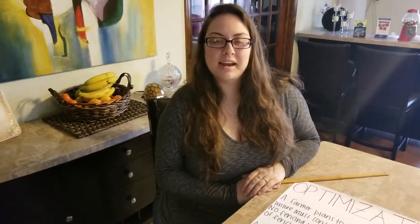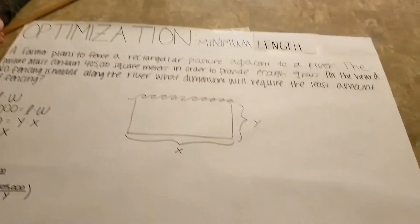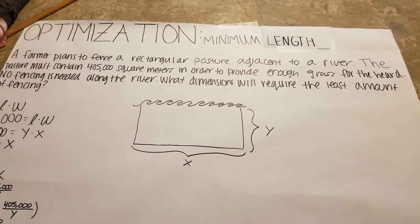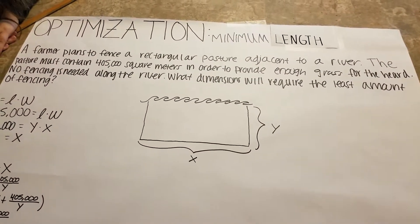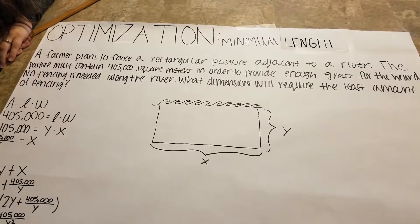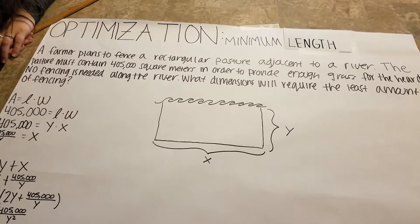My name is Cassandra Bush and today we're going to be doing optimization problems focused on minimum length. Our problem for today is a farmer plans to fence a rectangular pasture adjacent to a river. The pasture must contain 405,000 square meters in order to provide enough grass for the herd.